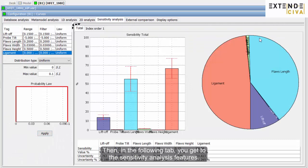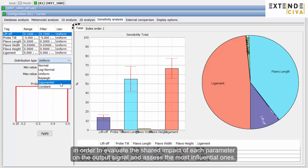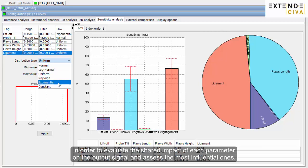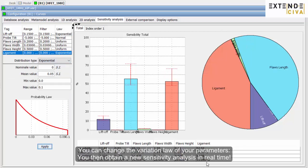Thanks to the metamodel, the so-called Sobol indices can be computed in order to evaluate the shared impact of each parameter on the output signal and assess the most influential ones. You can change the variation law of your parameters. You then obtain a new sensitivity analysis in real-time.